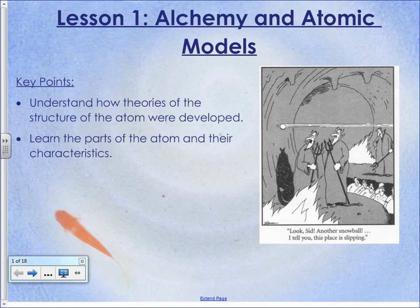You know that you have to know these particular things. So, key points for this one: we need to understand how the theories of the structure of the atom were developed — why did people think the atom looked this way and then later think it looked a different way? Why did this idea change? What came along to change our thinking? And then secondly, learn the parts of the atom and their characteristics. That's probably a review.